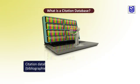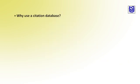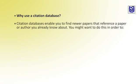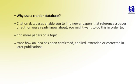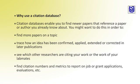What is the citation database? Citation databases compile the citations in the references list of bibliographies of a scholarly publication. Citation databases enable you to find newer papers that reference a paper or author you already know about — in order to find more recent papers on a topic, trace how an idea has been confirmed, applied, extended, or corrected in a later publication, see which other researchers are citing your work, and find citation numbers and metrics to report on a job, grant application, or evaluation.